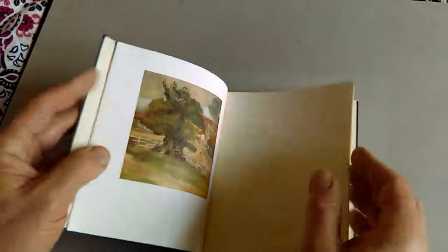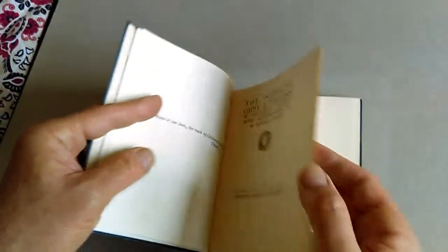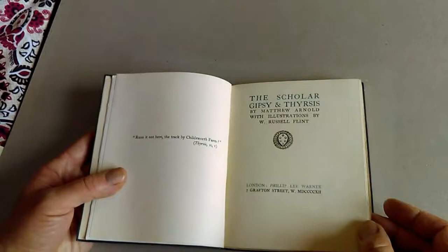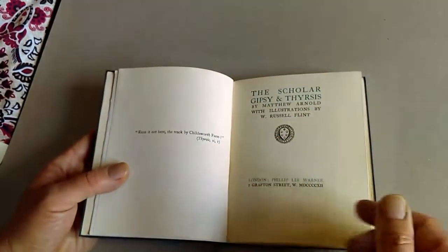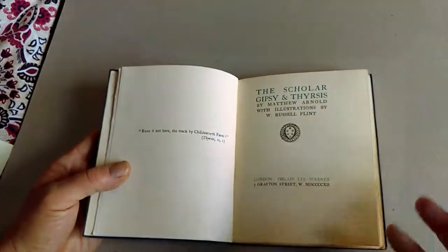It is Matthew Arnold's two highly evocative poems, The Scholar Gypsy and Thyrsis, illustrated by the later extremely famous artist Sir William Russell Flint.